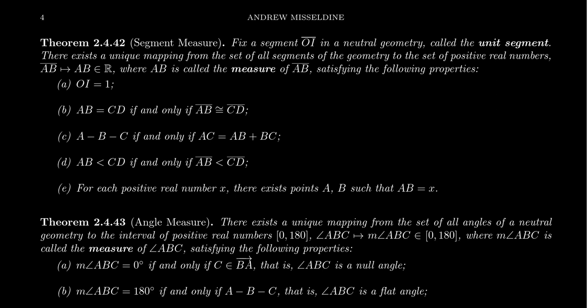The measure function also behaves well with betweenness. If the point B is between the points A and C, this happens only if the sum of the two measures, AB plus BC, is equal to AC. So the measure function is compatible with betweenness. It also behaves well with the inequality. The measure AB will be less than the measure CD only when the segment AB is less than the segment CD. With the inequality, AB is less than CD if it's a smaller number. These two notions coincide with each other in an if-and-only-if statement.